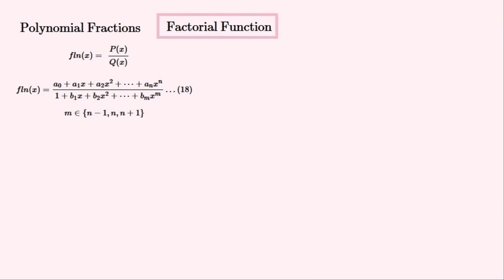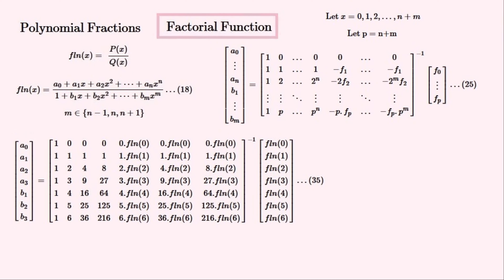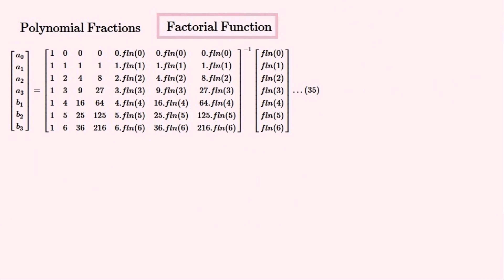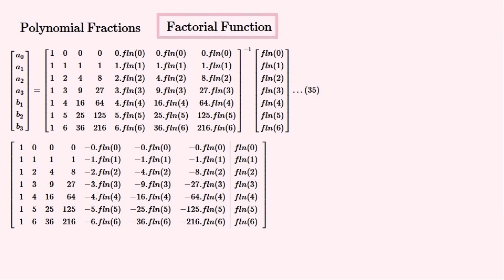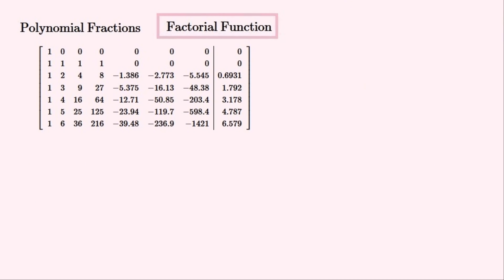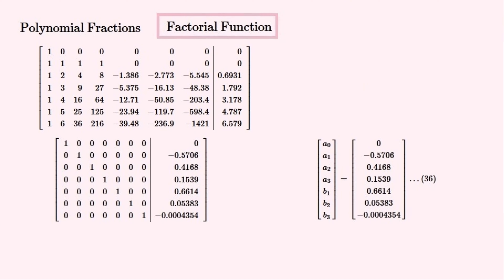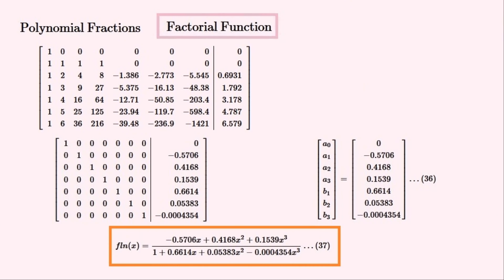Last but not least, we'll find the polynomial fraction that approximates this function. This is the general matrix equation we'll have to solve to find the coefficients of this polynomial fraction. We'll substitute n equal to 3 and m equal to 3 into this matrix equation to give us a more solvable matrix equation. We'll convert this matrix equation into its corresponding augmented matrix and evaluate all of the function values. Solving it gives us this matrix, which we convert back into the vector equation, and then write out the actual polynomial fraction.